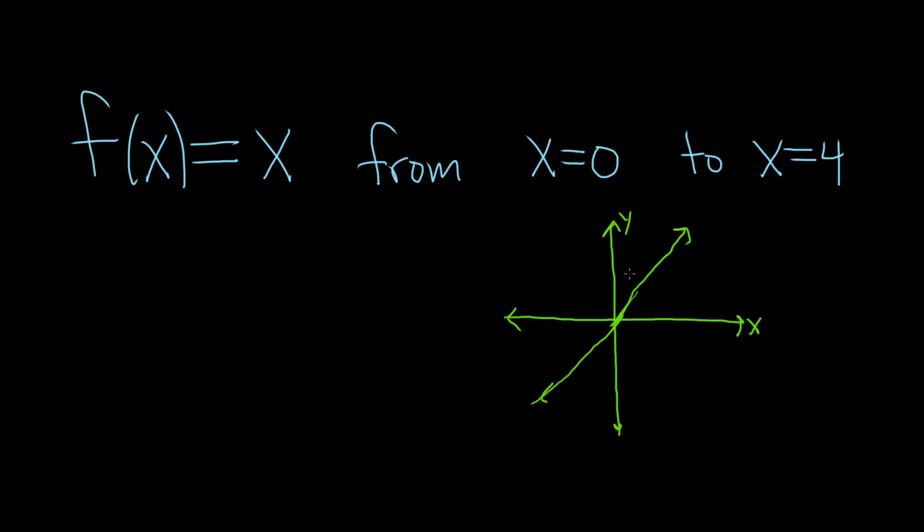And we're going from 0 to 4. So maybe here is 0 and here is 4. And so we're looking for this area here.